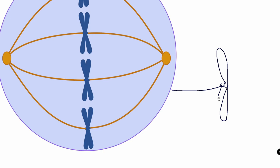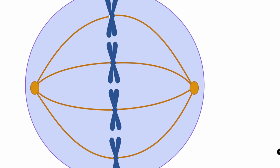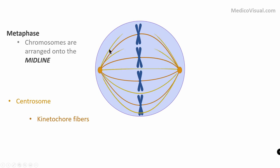Why is it called kinetochore? Kineto means to move, and core refers to the chromatid. The kinetochore helps move chromatids away from each other. The fibers that attach to the centromere at the kinetochore are called kinetochore fibers. There are also other fibers not attached to the kinetochore — called non-kinetochore fibers or polar fibers. Both types are spindle fibers.